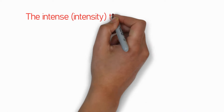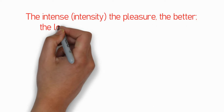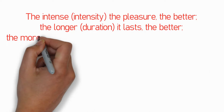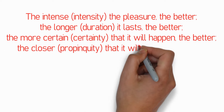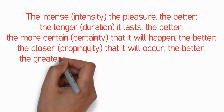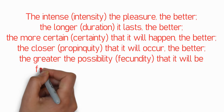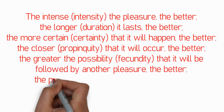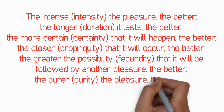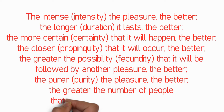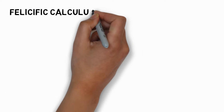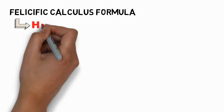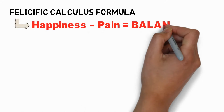For Bentham, the more intense the pleasure, the better; the longer it lasts, the better; the more certain that it will happen, the better; the closer that it will occur, the better; the greater the possibility that it will be followed by another pleasure, the better; the purer the pleasure, the better; and the greater the number of people it benefits, the better. The formula of Bentham's philosophic calculus goes like this: happiness minus pain equals balance.